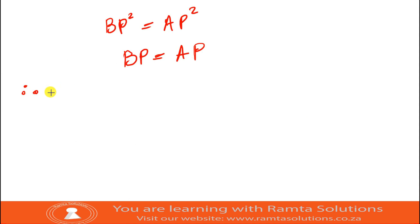Now what do we say? Therefore, OP bisect AB. Can you see that? So why are they saying it's bisecting it? So BP is equal to AP.